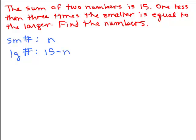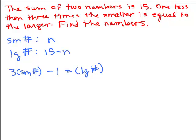What it says is one less than three times the smaller — so basically, if you're taking away one from three times the smaller number, that's going to give us whatever the larger number is. This is sort of halfway between words and algebra. Now let's plug in: we call the small number n, and the large number we called 15 minus n. That's one way of getting the equation, if this is how we defined our small and large number.